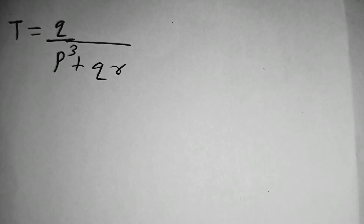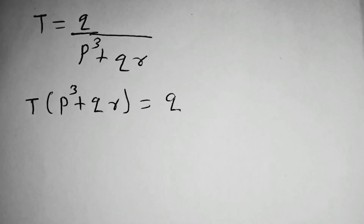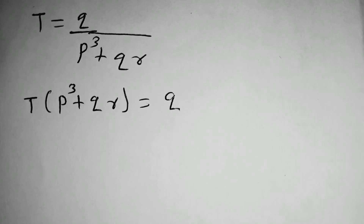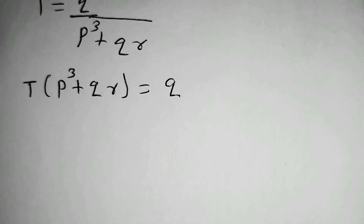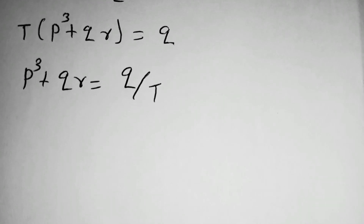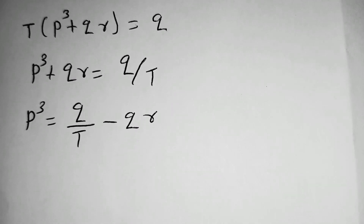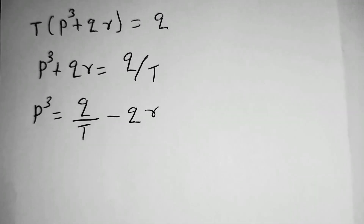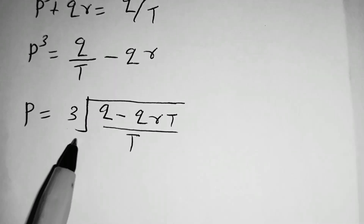The other part of the question is T is equal to Q divided by P cubed plus QR, and you are required to make P the subject of the formula. Multiplying by the denominator on both sides, we obtain T times bracket P cubed plus QR is equal to Q. Dividing both sides by T gives P cubed plus QR equals Q over T. Then subtracting QR from both sides gives P cubed equals Q over T minus QR. Taking the cube root of both sides, P equals the cube root of Q minus QRT, all over T.